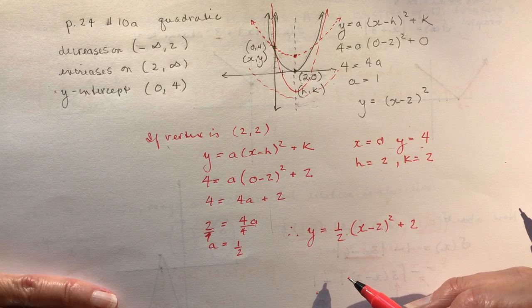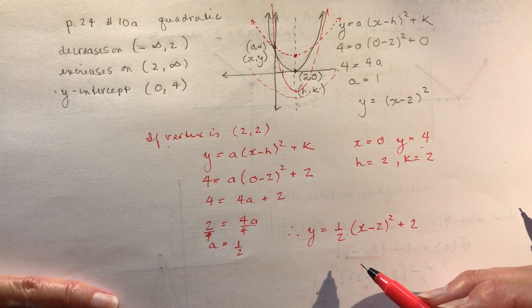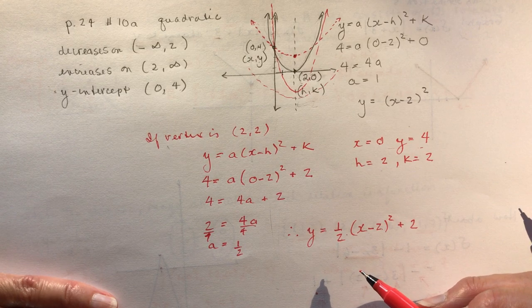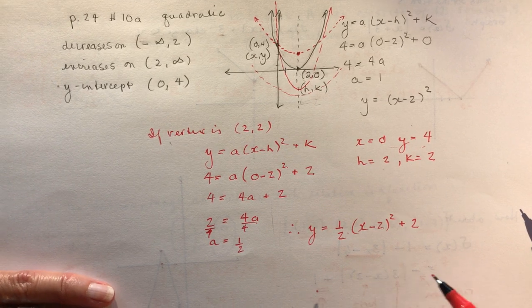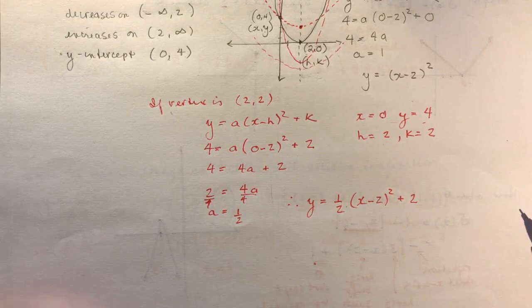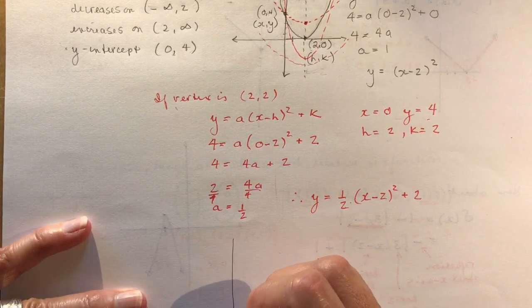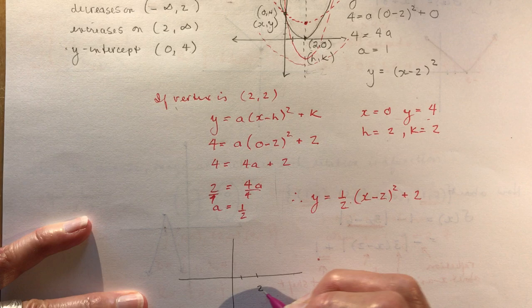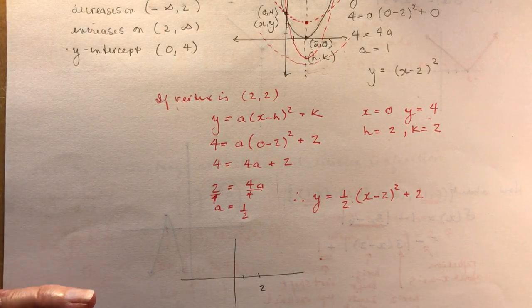The final part of the question says, if x is an absolute value function and has the characteristics in part A, is there only one such function? And the answer is no, of course not. It's the same situation as above. If I have an absolute value function, it just means it has a little different shape.